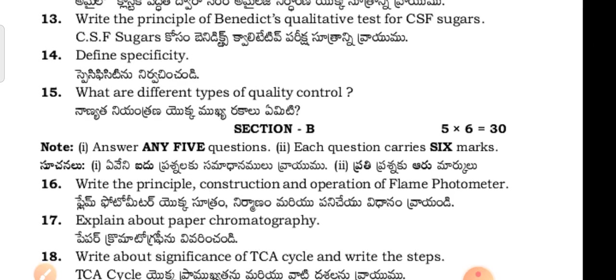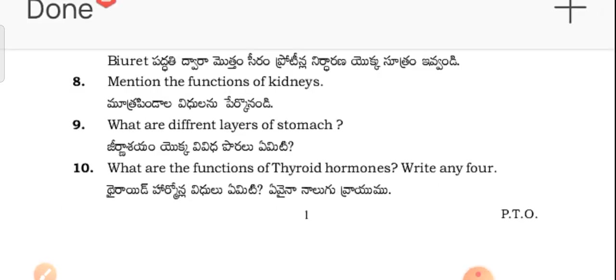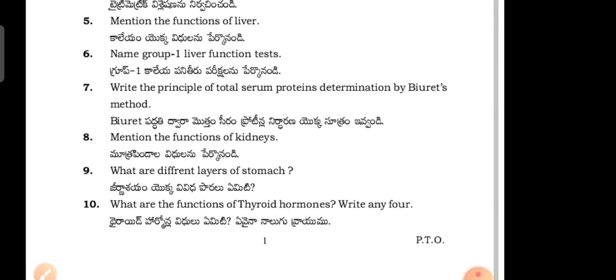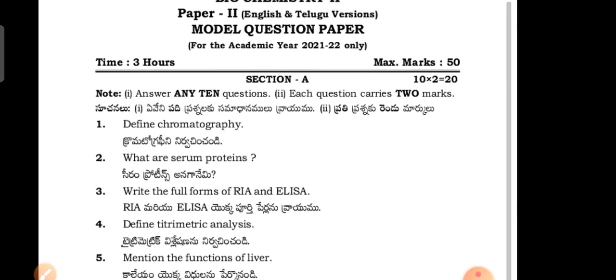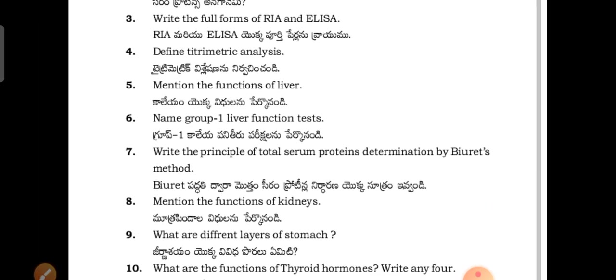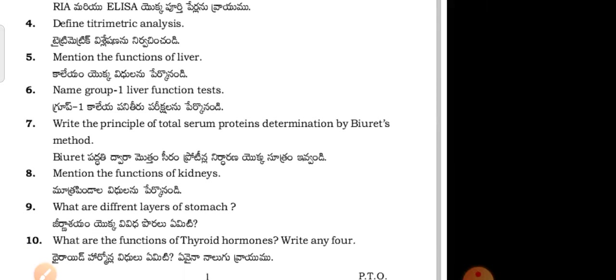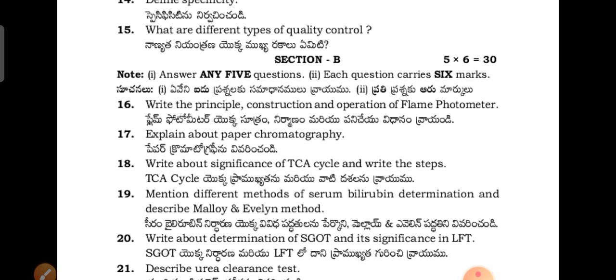This is the biochemistry question paper for MLT second year students in Telugu and English. You people have the 50% choice. In Section A they have given 15 questions and you have to attempt 10. In Section B they have given 10 questions and you have to attempt any 5. I have now covered Paper 1 biochemistry for the MLT second year students.